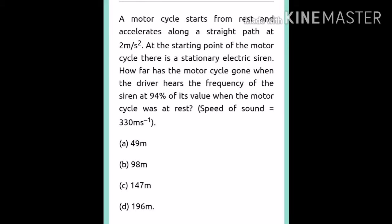A motorcycle starts from rest and accelerates along a straight path at 2 meters per second squared. At the starting point of the motorcycle, there is a stationary electric siren. How far has the motorcycle gone when the driver hears a frequency of the siren at 94% of its value when the motorcycle was at rest? Given that speed of sound is equal to 330 meters per second.